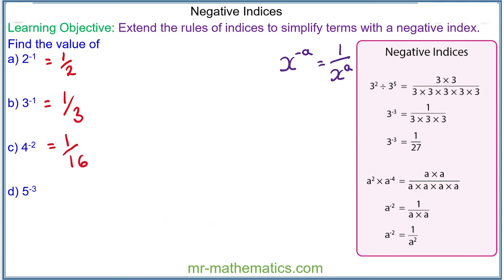For question d we have 5 to the power of negative 3. The negative power means this is 1 over 5 cubed. 5 to the power of 3 is 125, so it is 1 over 125.